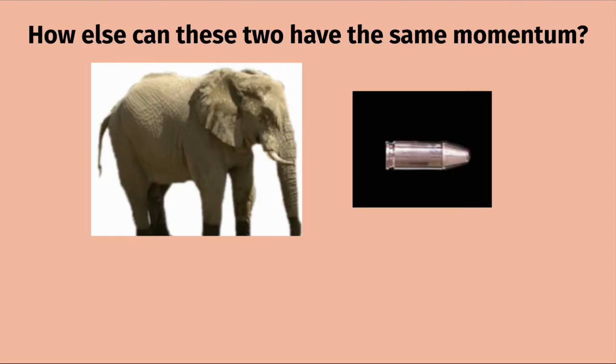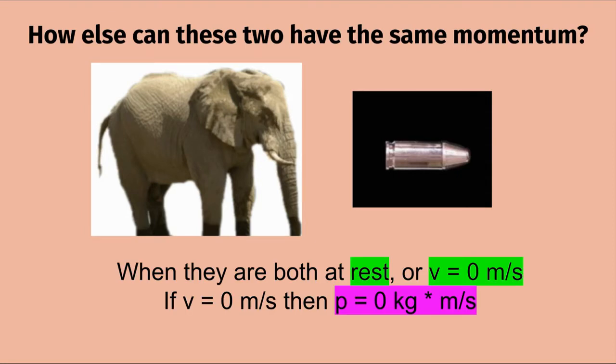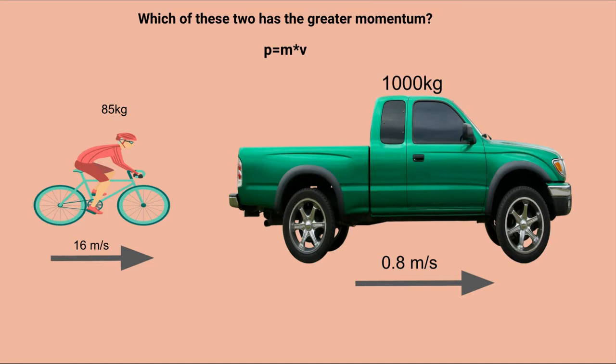What is another scenario in which these two objects can have the same momentum? They can have the same momentum when they are both at rest — meaning velocity equals zero meters per second. If velocity is zero, then momentum is also equal to zero for both objects.